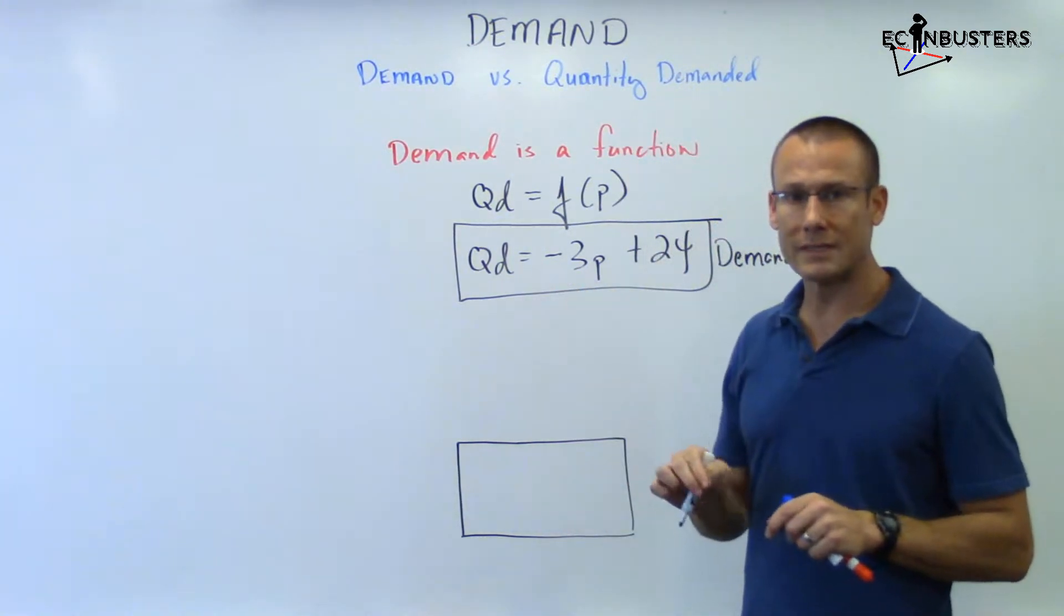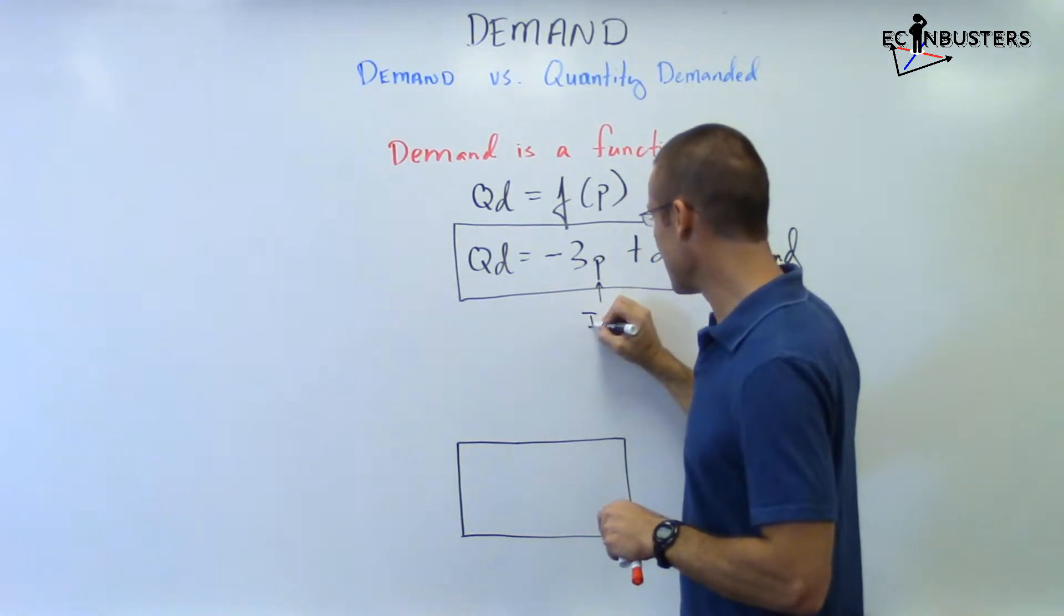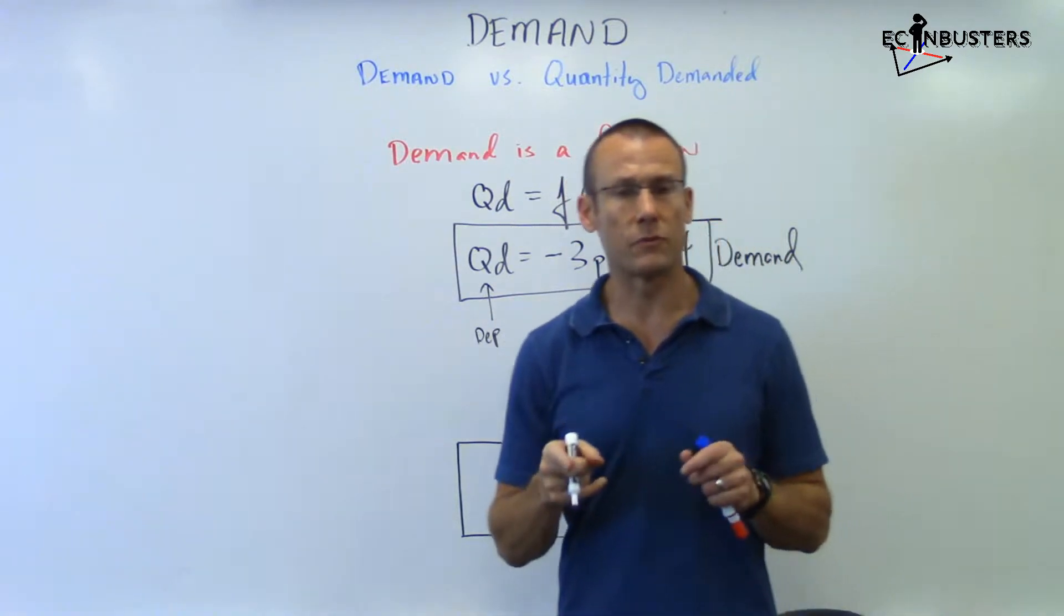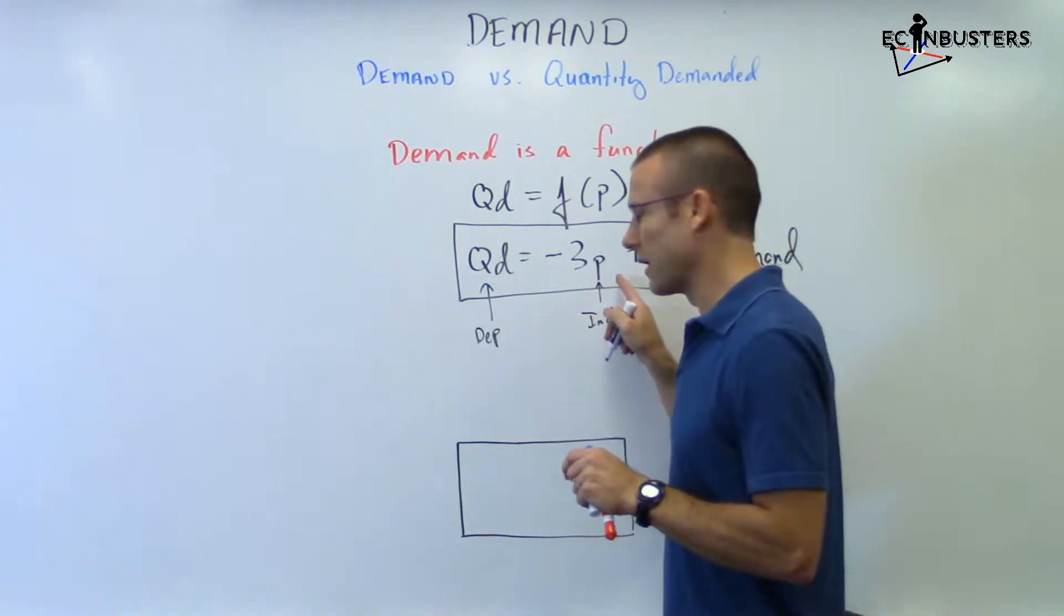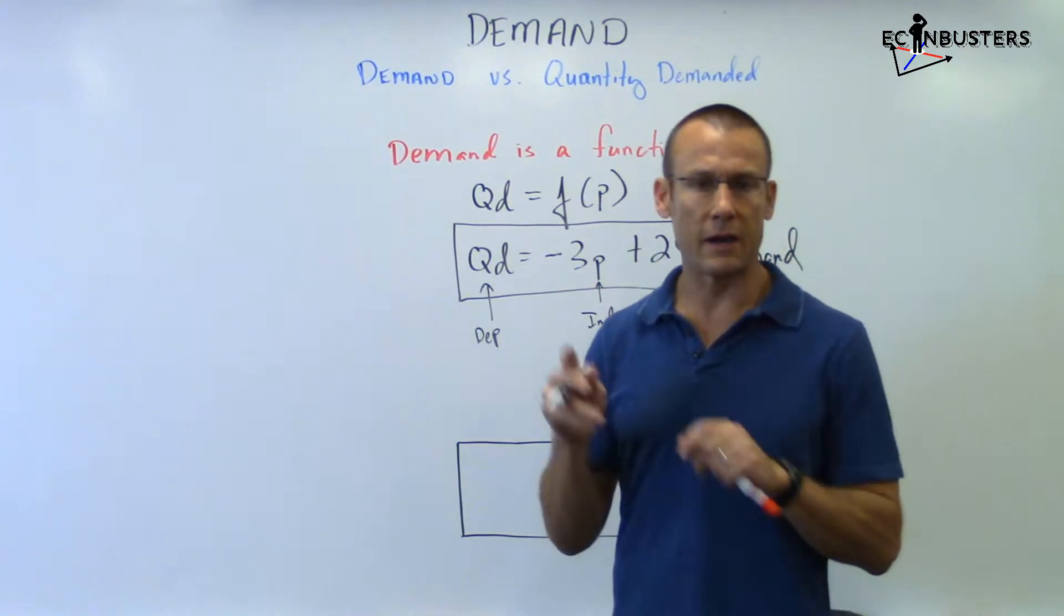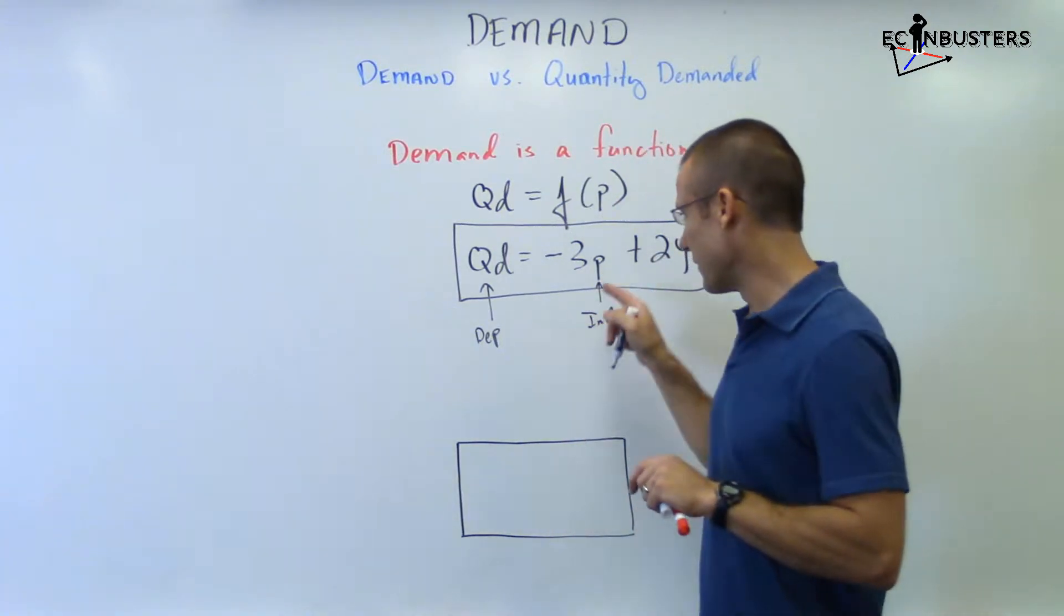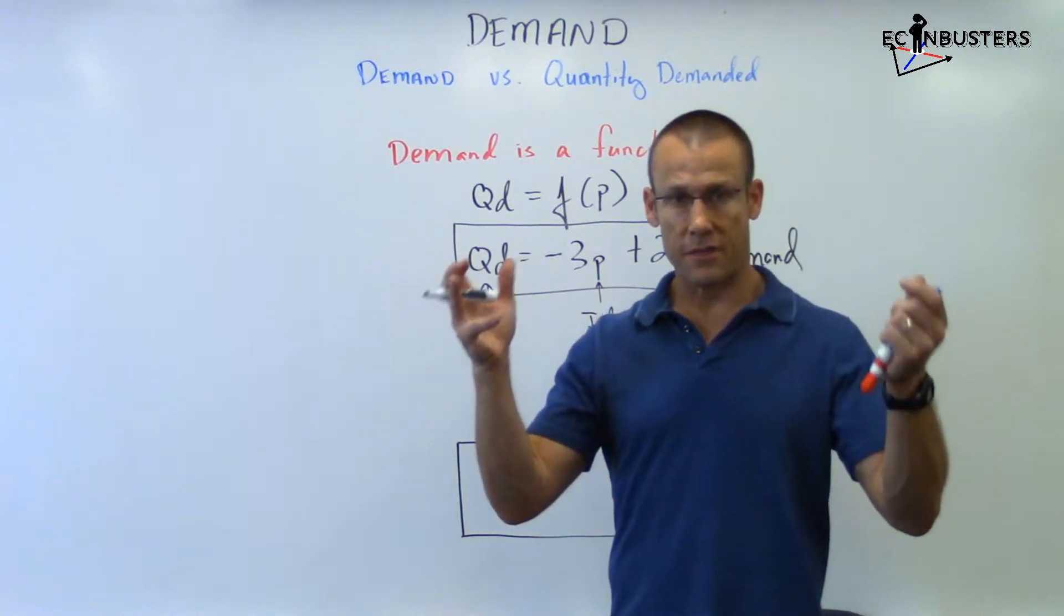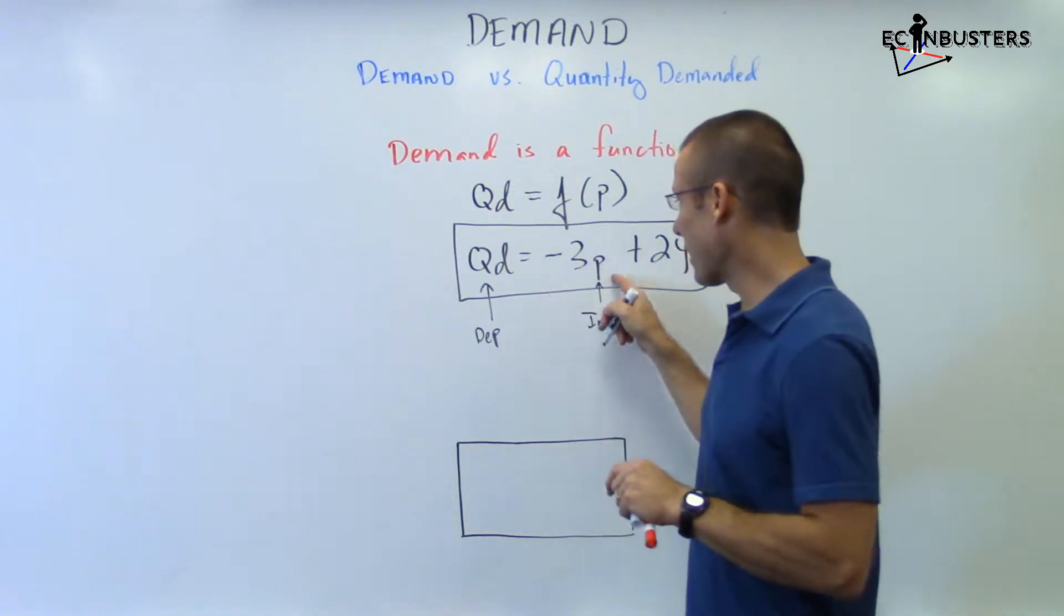What is the independent? What is the dependent variable? Well, just looking at this expression price is the independent, quantity demanded is the dependent. Now, for some of you that's already seen a graph, you might be like, well, no, that doesn't make sense. Price is on the vertical axis. I know we haven't gotten graphical yet, but I know some of y'all have seen a graph already and that's right. We're going to put price on the vertical axis. And normally that's got the dependent variable, but not in economics, not when you're talking about demand price.